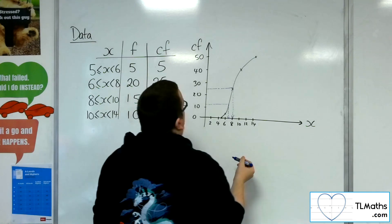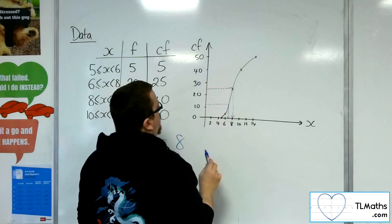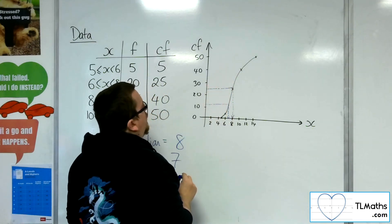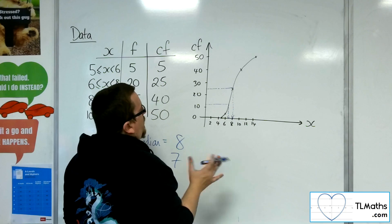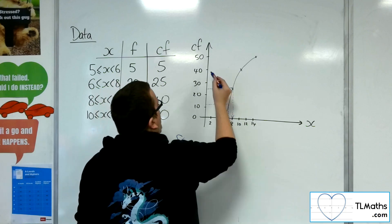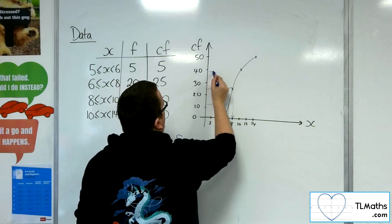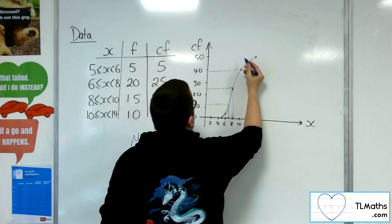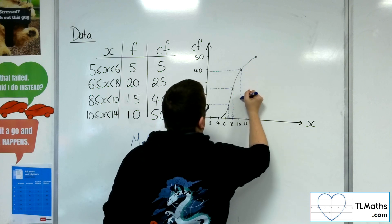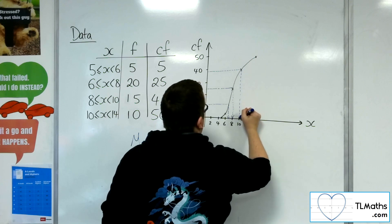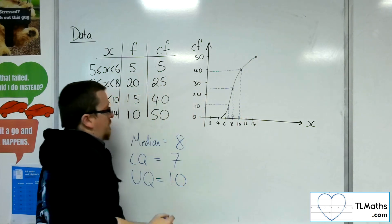The upper quartile is going to be three-quarters of the way up, so that'll be 37.5. Reading off from there, I'm getting about 10 for that.